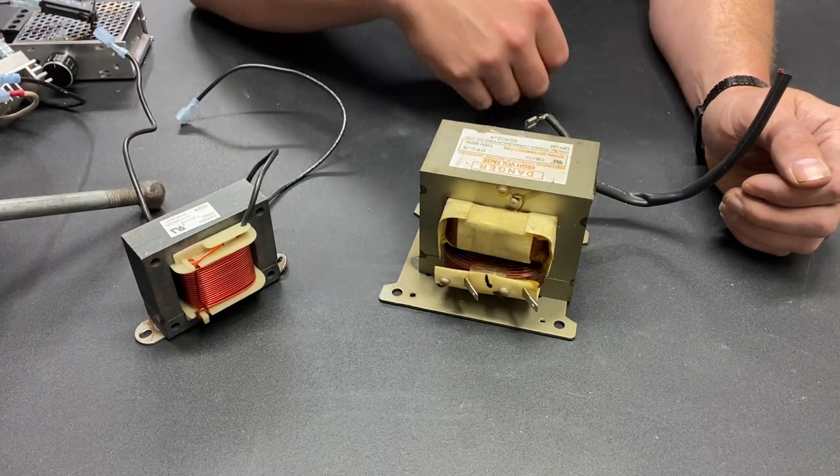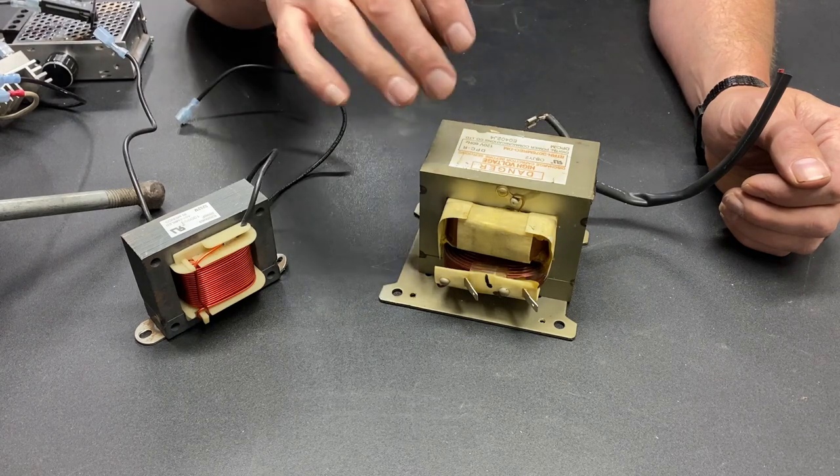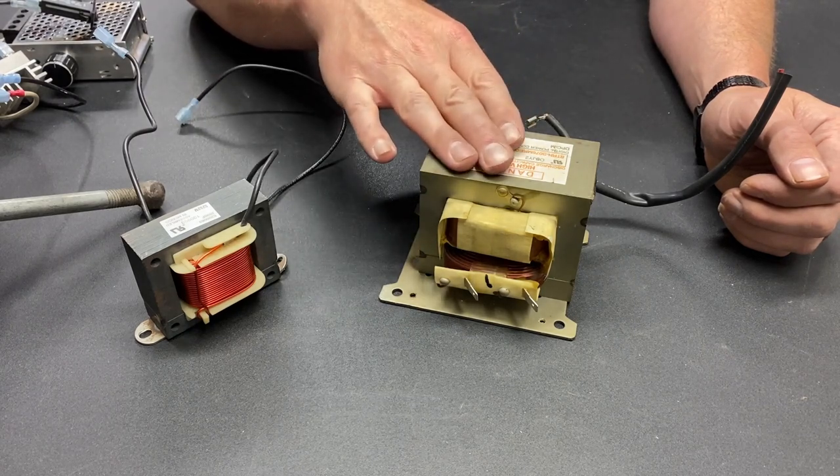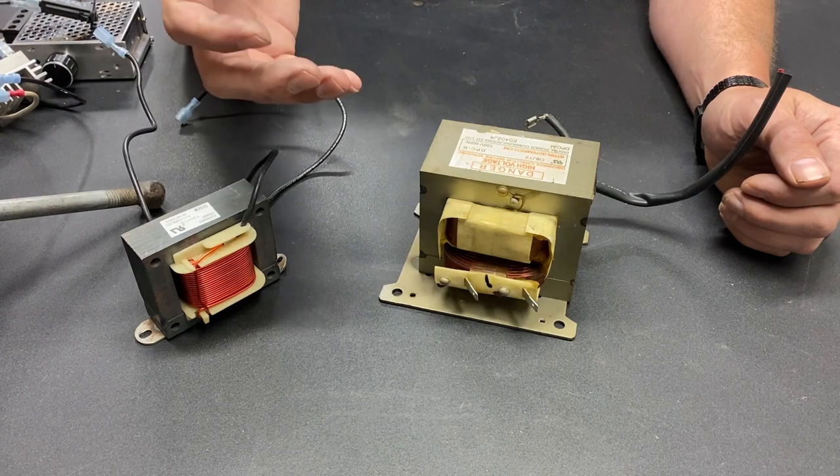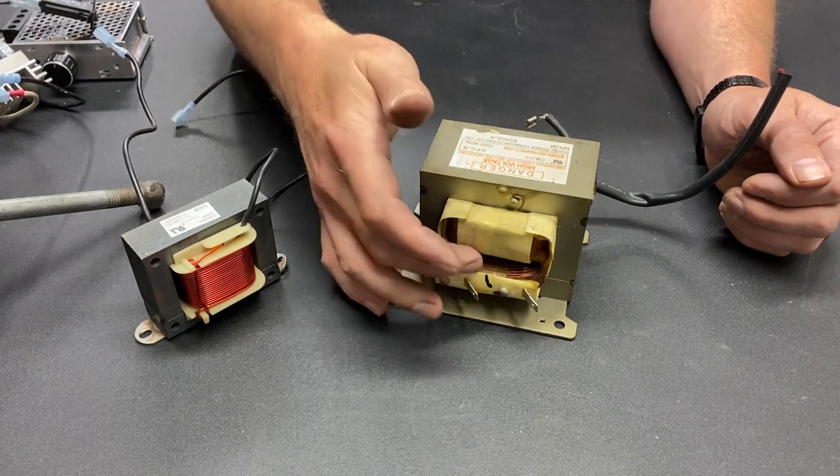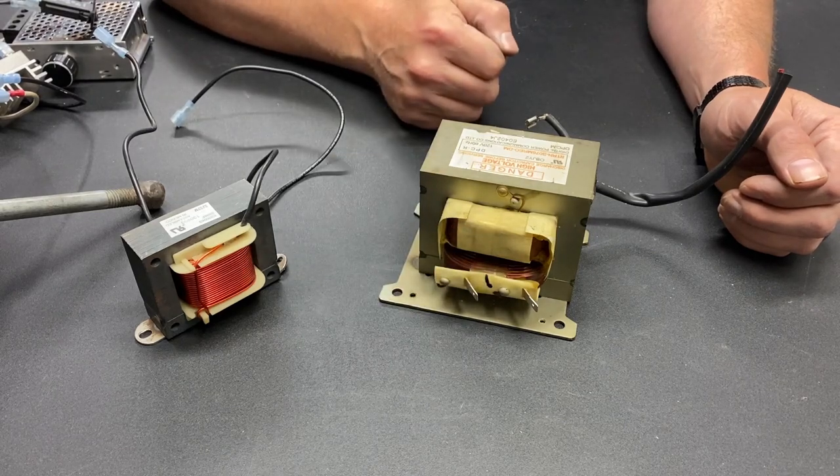Now, the first question you may be wondering is why I would even mess with recoiling this. Well, when you're working with DC current, the best type of wire is stranded wire and the coil inside this is solid wire.